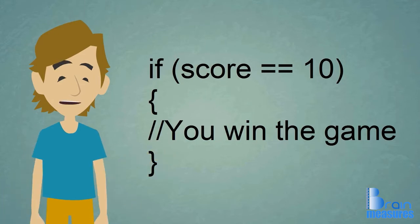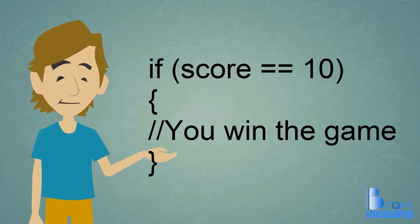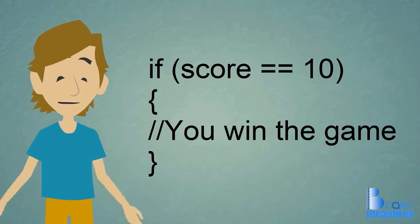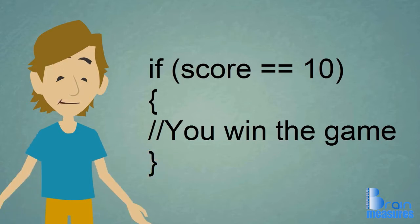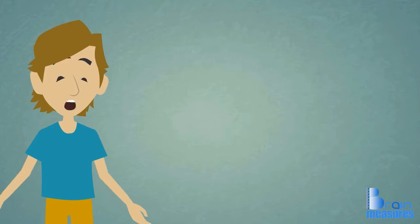Also, you see those two slashes? What that means is that that is a comment, and when you comment something out, it actually doesn't run in the code. Comments are not read by the compiler. Comments are usually there to remind the programmer what lines of code do, as well as reminders for later functionality. In this case, I just used it to tell what could happen in the if statement.